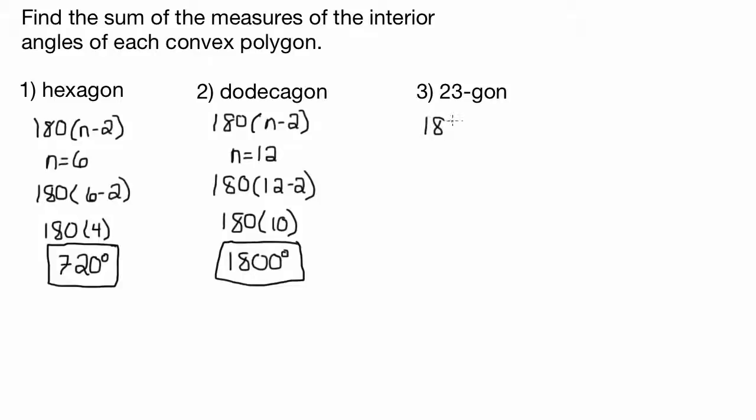So again, if we want the sum of the measures of the interior angles, we're just going to do 180 times n minus 2. And in this case, n equals 23.